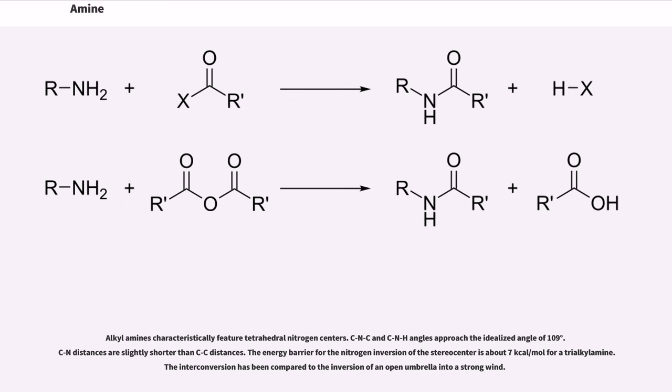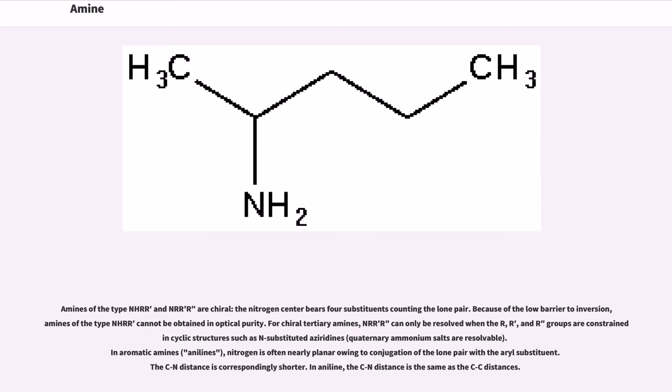Alkyl amines characteristically feature tetrahedral nitrogen centers. CNC and CNH angles approach the idealized angle of 109 degrees. CN distances are slightly shorter than CC distances. The energy barrier for the nitrogen inversion of the stereocenter is about 7 kilocalories per mole for a trialkylamine. The interconversion has been compared to the inversion of an open umbrella into a strong wind. Amines of the type NHRR' and NRR'R'' are chiral. The nitrogen center bears four substituents counting the lone pair.